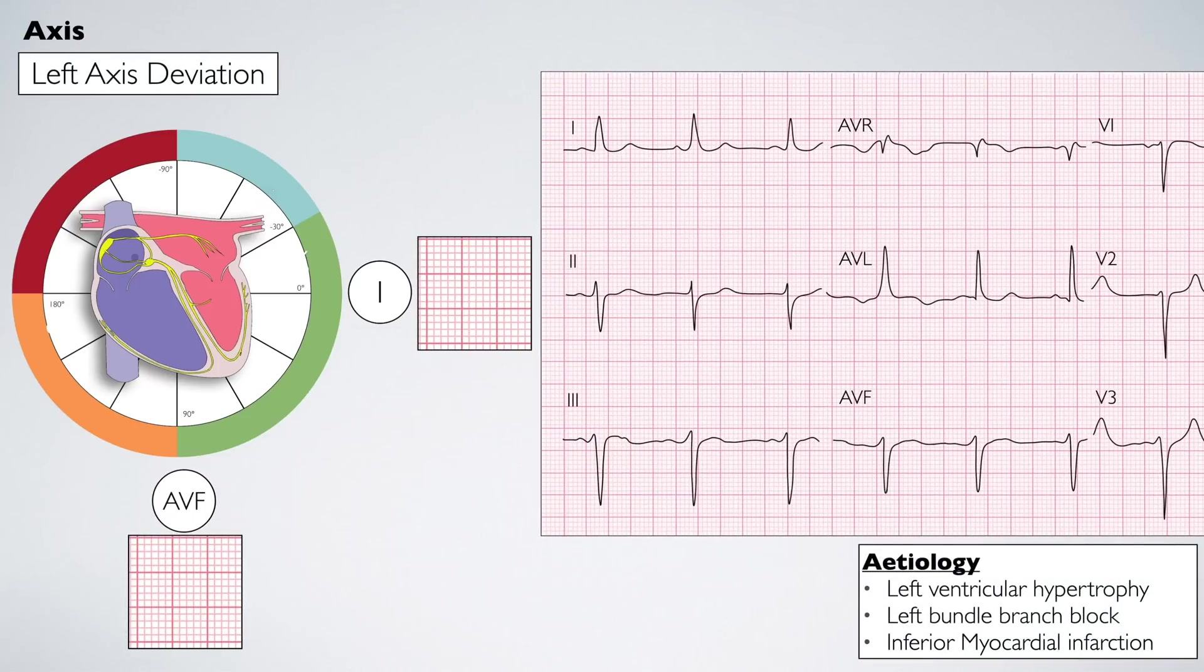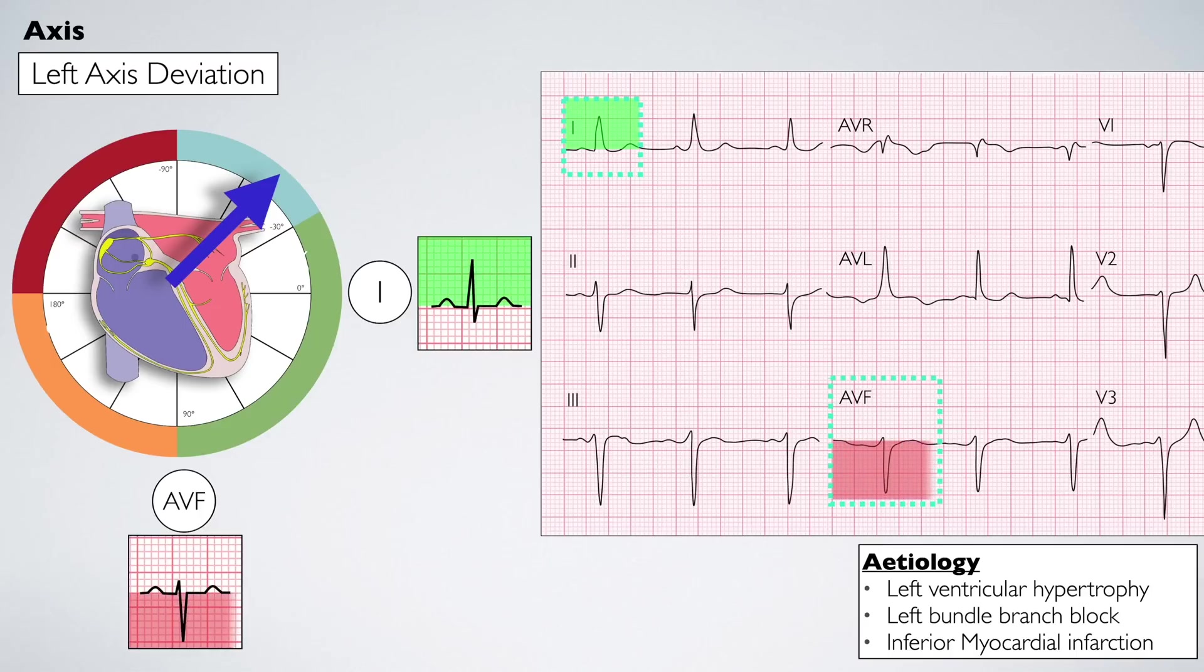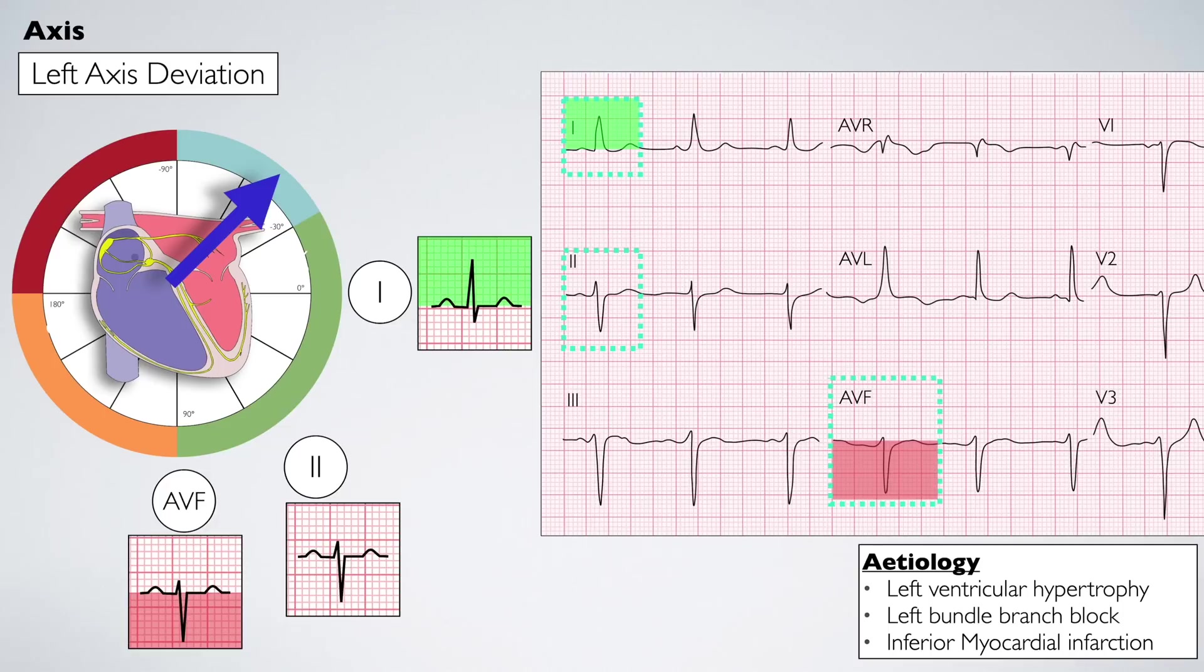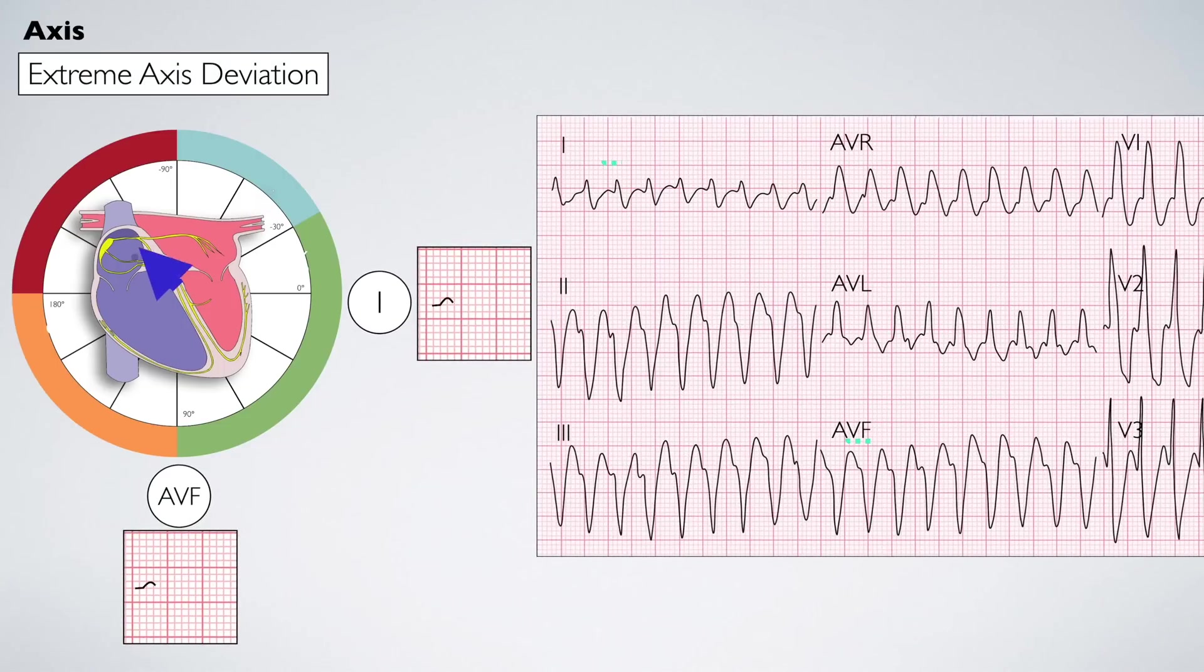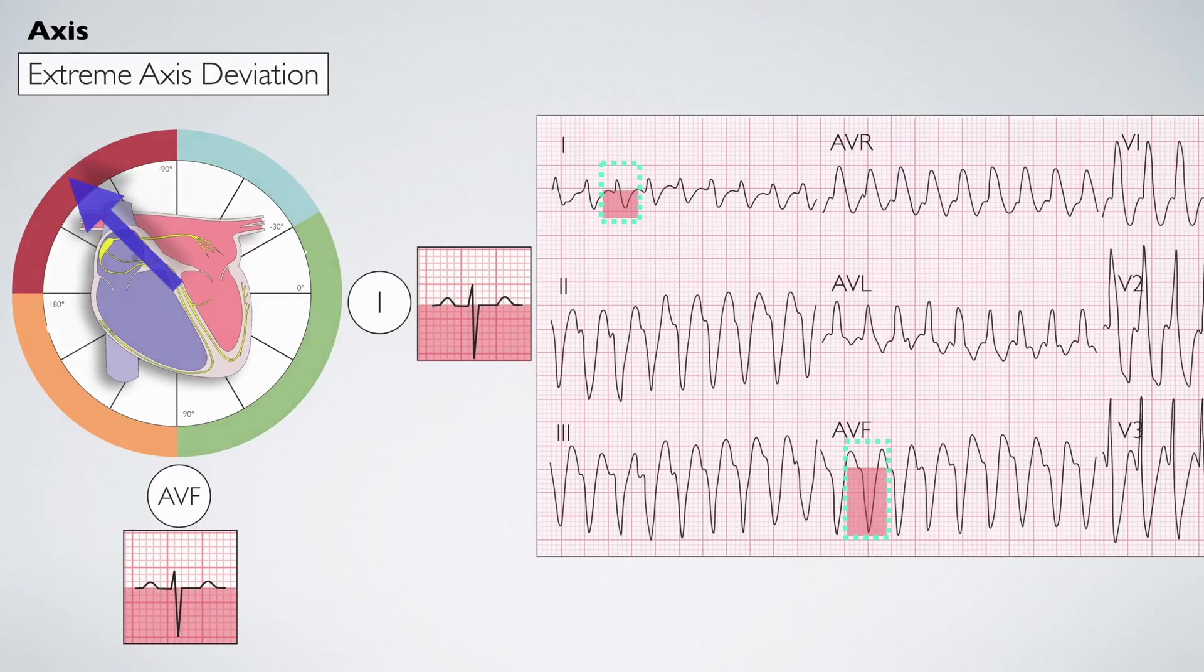Left axis deviation: in this scenario, lead 1 is positive while AVF is negative. Lead 2 must also be negative to confirm left axis deviation. Finally, extreme axis deviation: here both QRS complexes are negative, typically caused by abnormal lead placement or ventricular tachycardia.